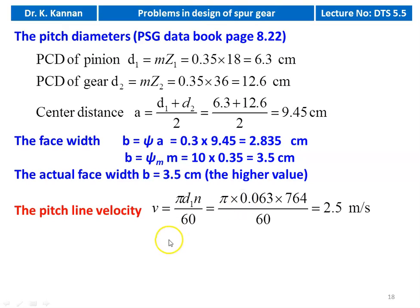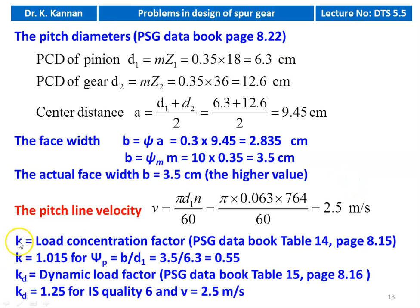Pitch line velocity V = π × D1 × N / 60 = π × 0.063 × 764 / 60 = 2.5 m/s. For checking: load concentration factor from table 14, page 8.15 — ψP = B/D1 = 3.5/6.3 = 0.55, so K = 1.015. Dynamic load factor from table 15, page 8.16 — IS quality 6, V = 2.5 m/s, Kd = 1.25.